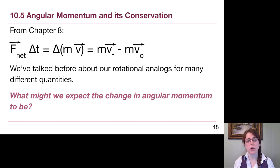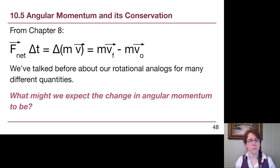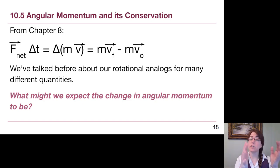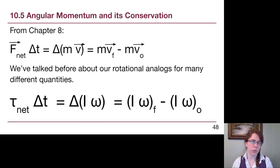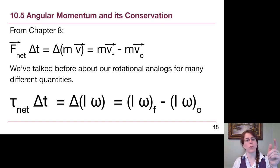Back in Chapter 8, we could change an object's momentum by pushing or pulling on it — net force times elapsed time gave impulse, causing a change in momentum. The rotational analog: instead of force, we use torque. Time stays time. So torque times elapsed time creates a change in angular momentum. The same structure from Chapter 8 applies, but using torque instead of force, moment of inertia I instead of mass, and angular velocity omega instead of regular velocity.